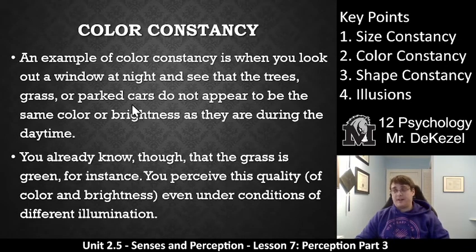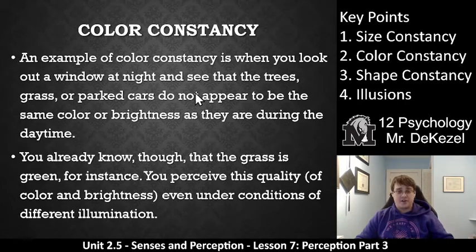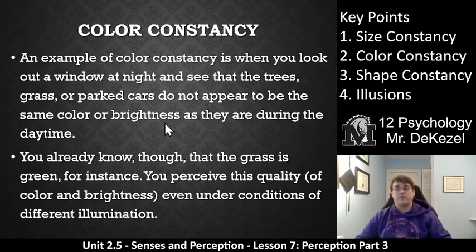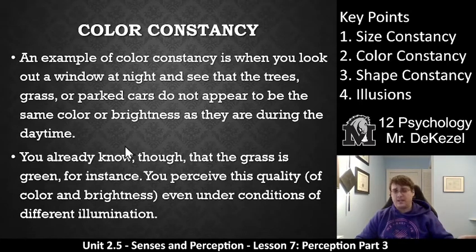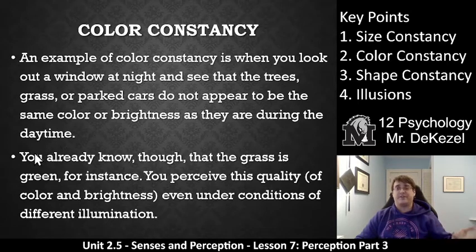The same thing really happens with color. Color constancy is when you look out a window at night and you see that the trees, grass, and parked cars are not in the same color or brightness as during the day, but you already know the grass is green, so you perceive it to be green. You perceive this quality of color and brightness even under conditions of different illumination — whether it's day, night, cloudy, or rainy.